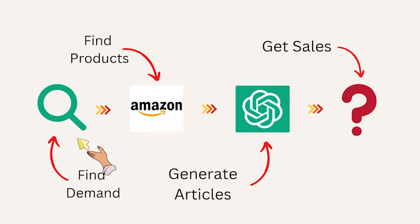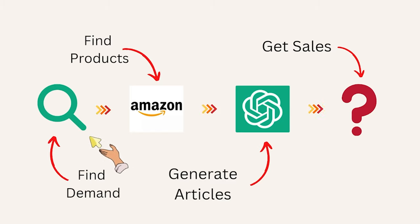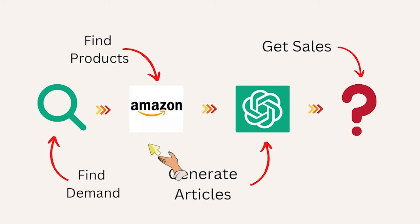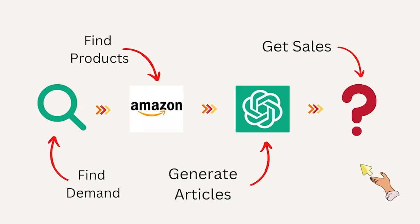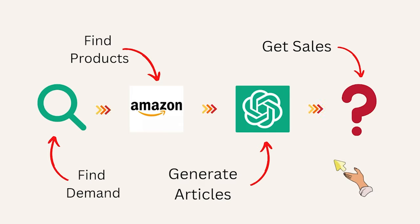The process is a four-step process. We're going to start with finding demand first — like always, you look for the demand to make money. I'll be using a tool to find in-demand topics. Then for those topics I'll use Amazon to fetch related products. After that we're going to generate articles using ChatGPT, and finally I'll show you how to double or triple our income from one article by creating multiple income streams. This is super cool — let's get started.